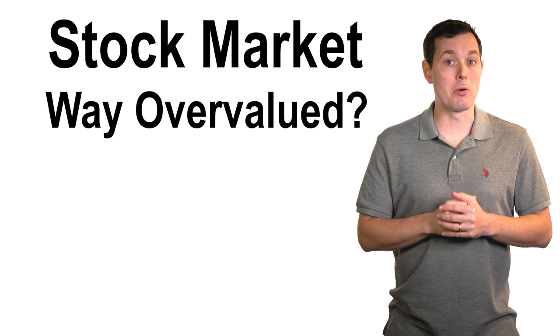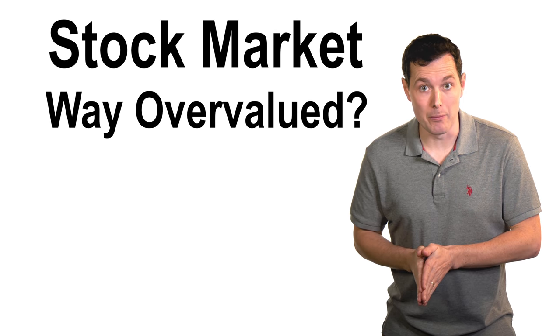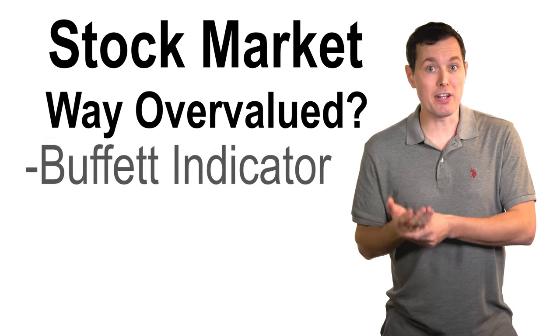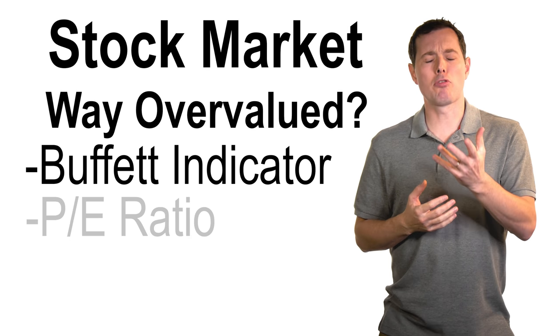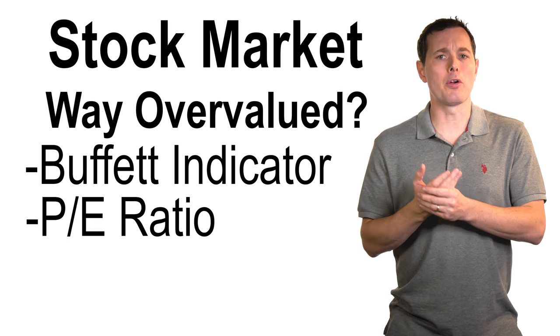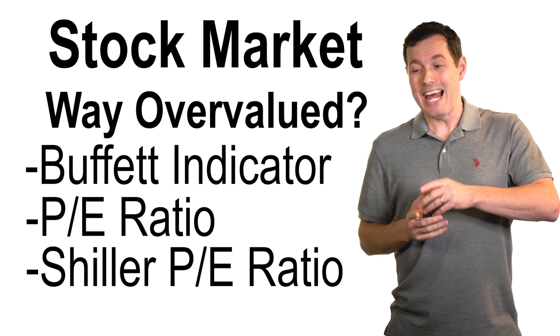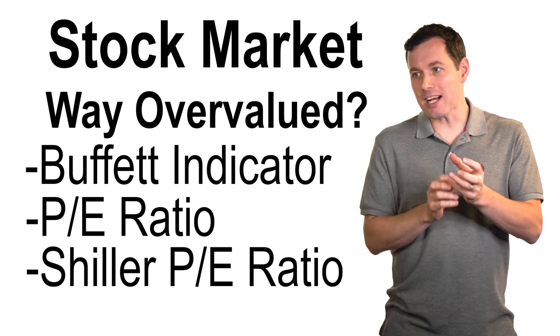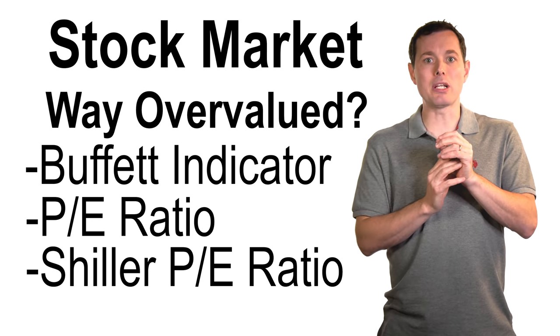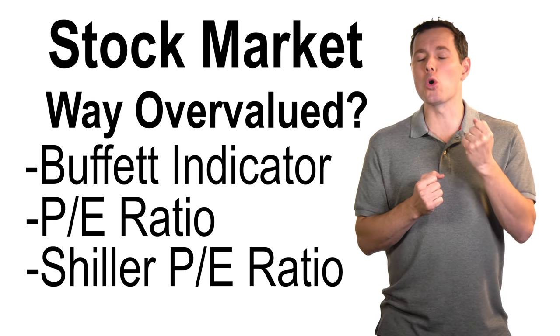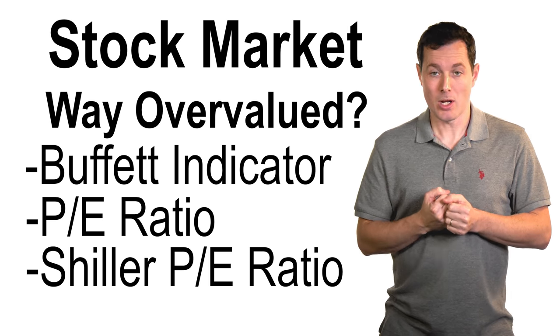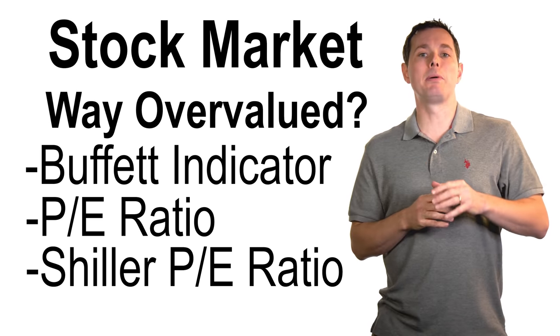Hi, I'm Jimmy. In this video, we're going to look at a few key stock market indicators to see if we can determine how overvalued the stock market is right now. We're going to look at the Buffett indicator, the broader price to earnings ratio, and the Shiller P.E. ratio. And then at the end, we're going to look at some sectors to see which sectors are more overvalued than others. So let's jump into this.